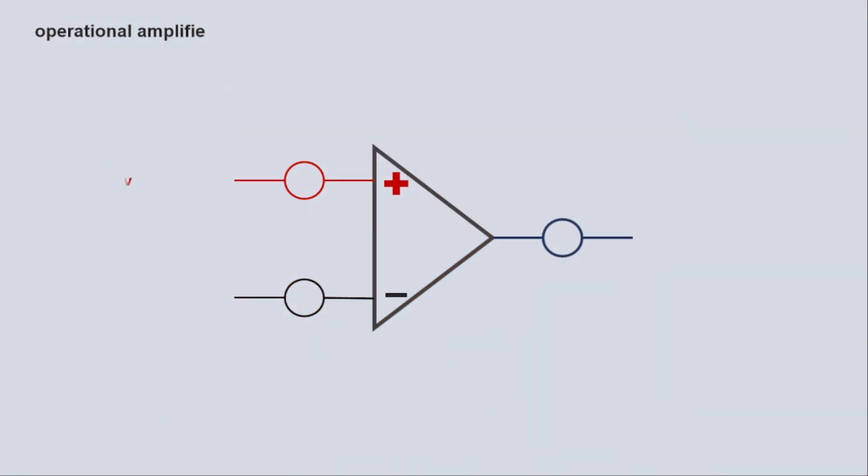We now check the operational amplifier by applying voltage to it. For example, there is a three millivolt supply on the non-inverting pin. Two millivolts are on the inverting pin V2.